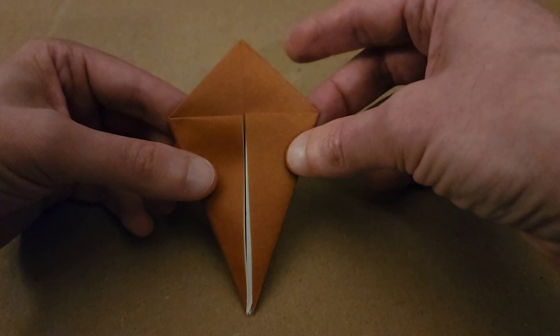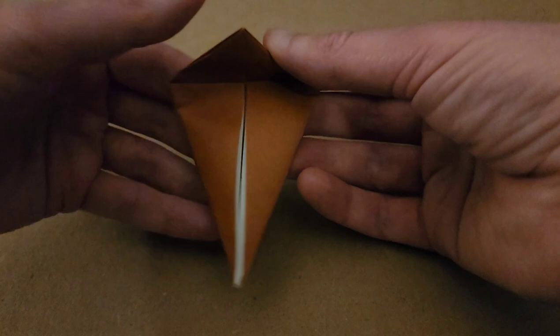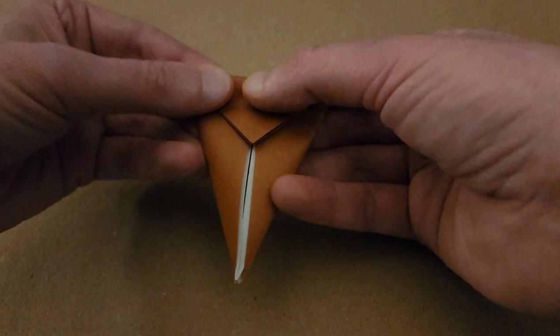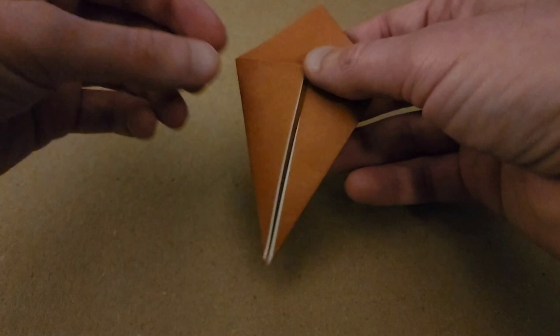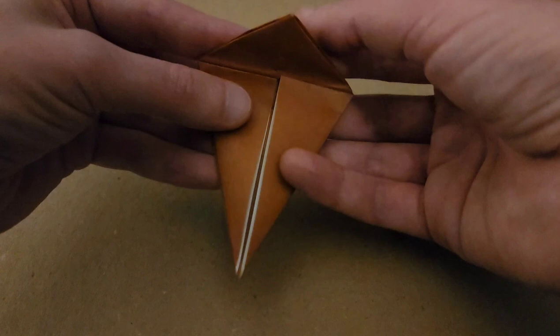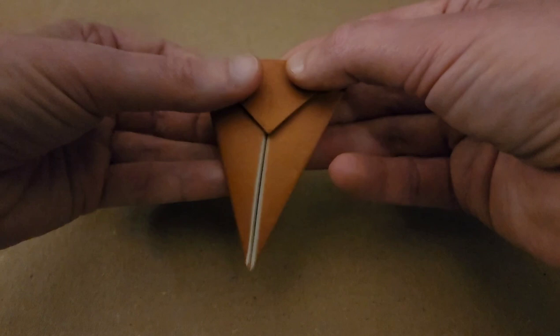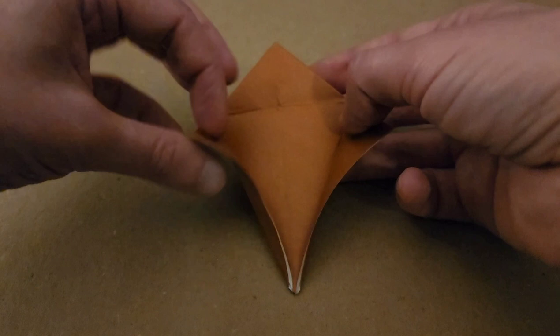And then, along this edge here, fold the top triangle down. Now, this part is not entirely necessary, but I like to do it anyway. So, fold that down. Unfold. Turn, and do the exact same thing on this side. All right. Unfold.